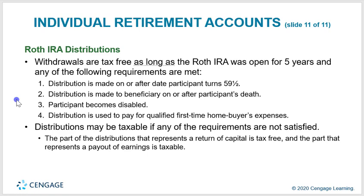Roth IRA distributions are tax-free as long as the Roth IRA was open for five years and any of the following requirements are met: distribution is made on or after the participant turns 59½, distribution is made to a beneficiary on or after the participant's death, participant becomes disabled, or distribution is used to pay for qualified first-time home buyer expenses. If these requirements are not satisfied, the part of the distribution representing a return of capital is tax-free, and the part representing earnings is taxable.